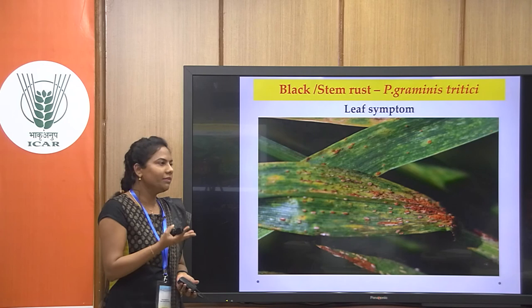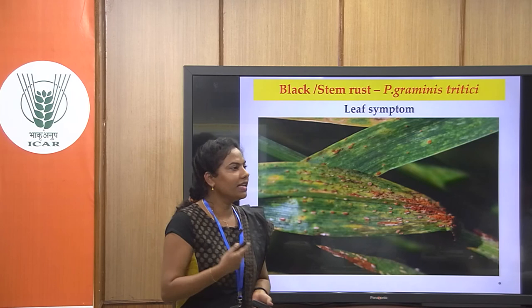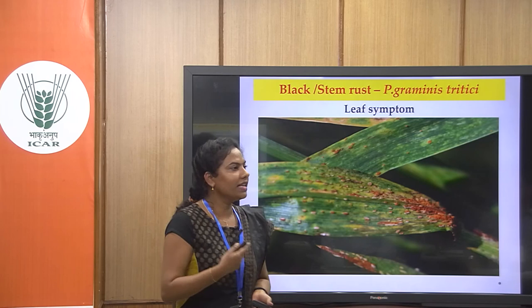These are the symptoms of stem rust of wheat. We have three types of rust: black stem rust, brown stem rust, and yellow stem rust. Today we discussed the life cycle of Puccinia graminis tritici. In the next class we will discuss in detail the black stem rust, orange stem rust, and yellow stem rust.